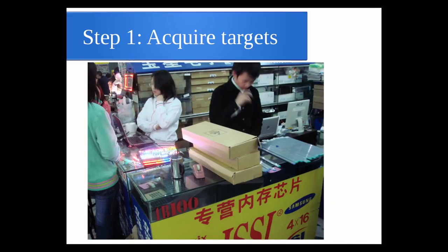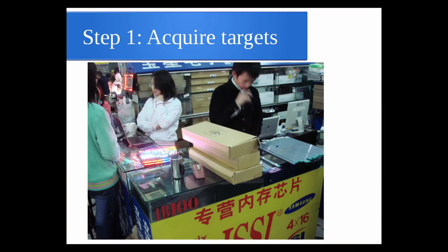The first step was to acquire targets — we wanted a wide selection of the fakest, worst cards we could find, because they tend to have the crudest construction. There's one place in the world to find these: Huaqiangbei in China. This is a typical picture of a vendor booth there — a guy selling flash memory with a little glass case packed with probably 50,000 flash chips. You walk up, negotiate in Chinese, hand him cash, and it's cash and carry. If you get fake ones, that's your fault.